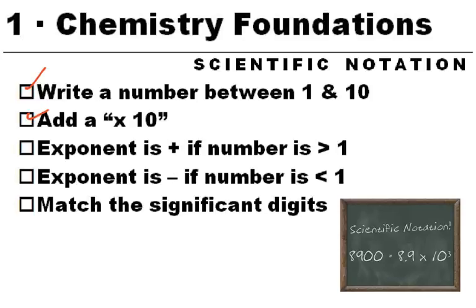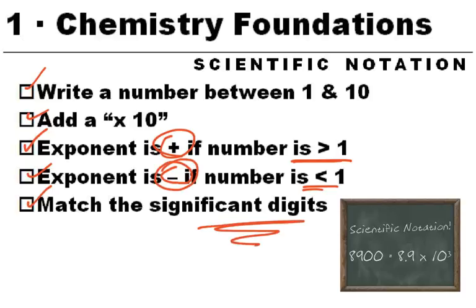We're going to add on a times 10, and then the exponent. If the number is greater than 1, then you're going to have a positive exponent. If it's less than 1, then you have a negative exponent, and you got to make sure that you're matching the significant figures. So let's try a few examples.